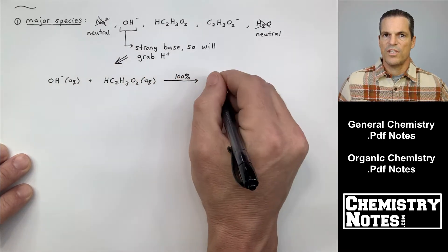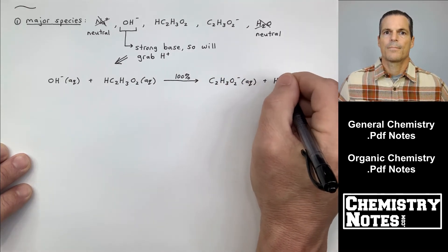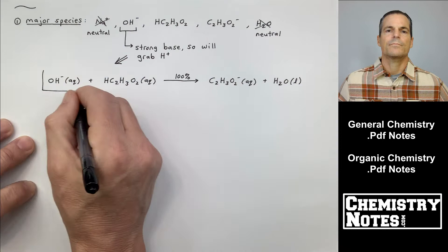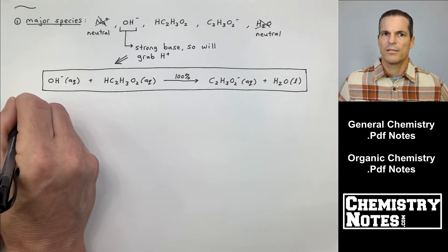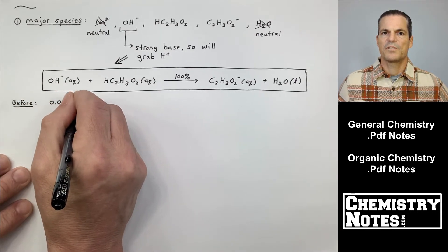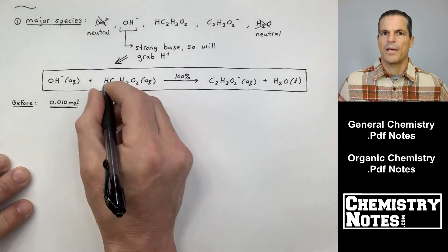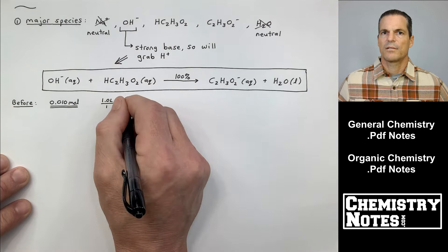100% it will yield C2H3O2-, so we're going to make even more of that, plus H2O liquid. So the OH- is going to be gone. The OH- is a reactant here, and 100% of it moves to the right towards product. And what's on the product side? C2H3O2-.